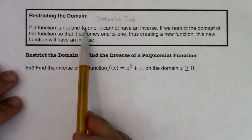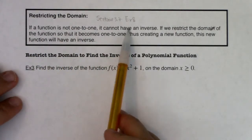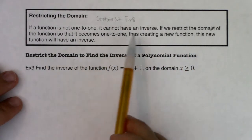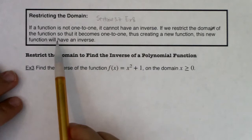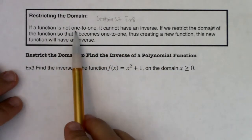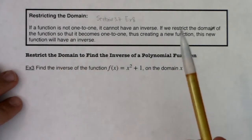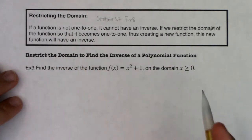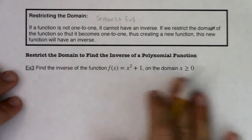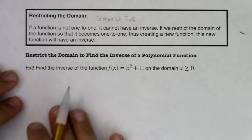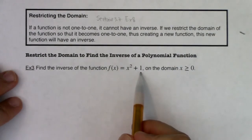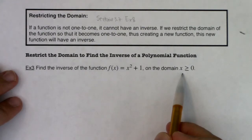So if a function is not one-to-one, it cannot have an inverse. If we restrict the domain of a function so that it becomes one-to-one, thus creating a new function, this new function will have an inverse. This was our workaround in math — if we found a function that wasn't one-to-one, we just cut down its domain, took a piece where the function was one-to-one, and then found its inverse. The problem says: find the inverse function of f(x) = x² + 1 on the domain x ≥ 0.